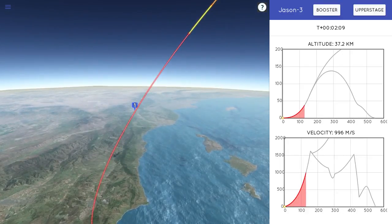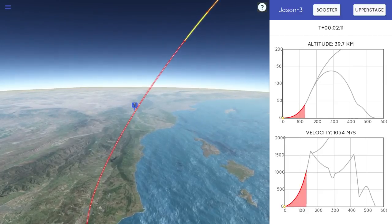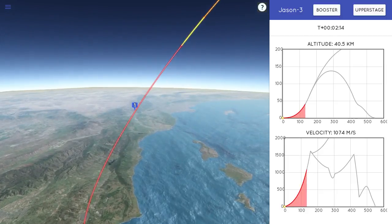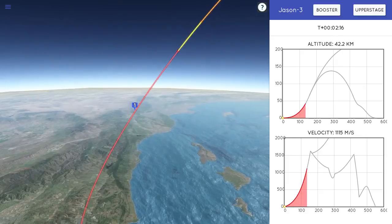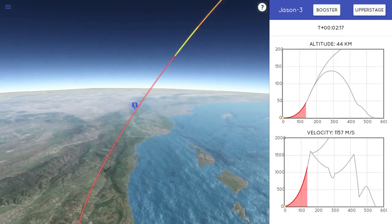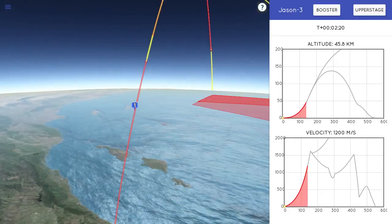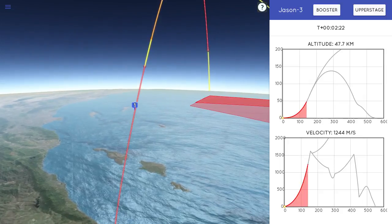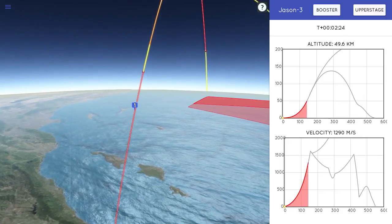All right, so we had a great liftoff of Falcon 9 from Vandenberg Air Force Base. So we actually have three really rapid events coming up right now. First is the stage separation. Then is the first burn of the second stage of the rocket. And then right after that, the fairing deploy. These are really rapid in sequence.